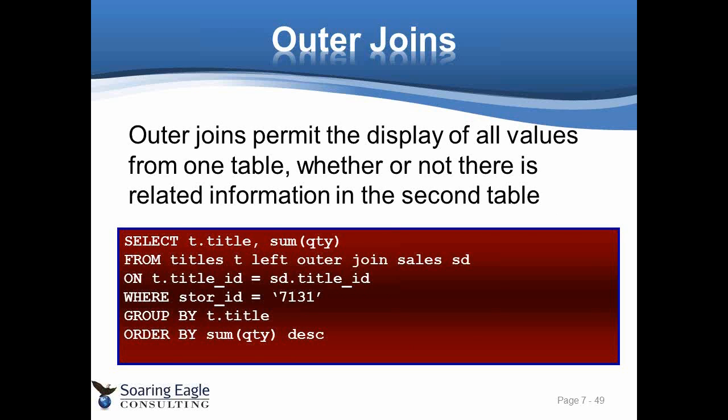Outer joins. The idea behind an outer join is that with an inner join, if I join the employee table to itself, Mary doesn't show up because there's no matching row. A join says give me all the rows in table A that have matching rows in table B — but what if they don't match? In this example, what I want to do is bring back the titles whether or not they have sold, so that I can see that I carry the title but it has zero sales. We do that with the outer join.